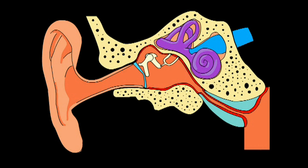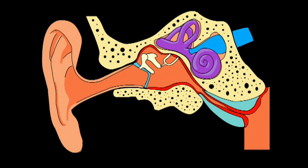To understand glue ear, it is helpful to have some knowledge of the anatomy of the middle ear. The middle ear is an air-filled space encapsulated in bone directly behind the eardrum. The middle ear is connected to the back of the nose by a narrow channel called the eustachian tube. This tube normally remains closed and will only open when you yawn or swallow to allow equalisation of middle ear pressure.